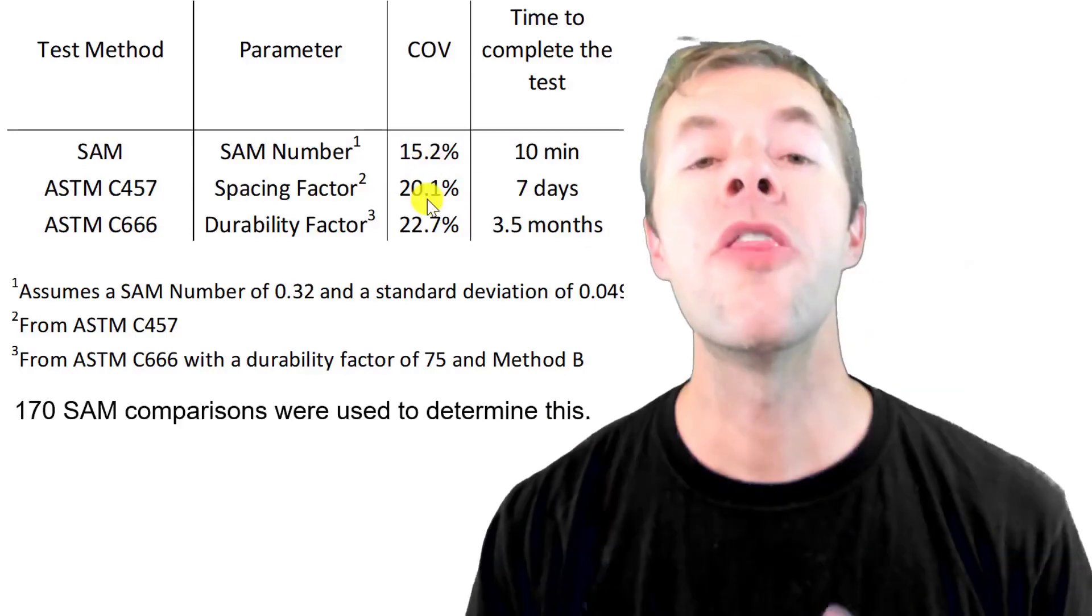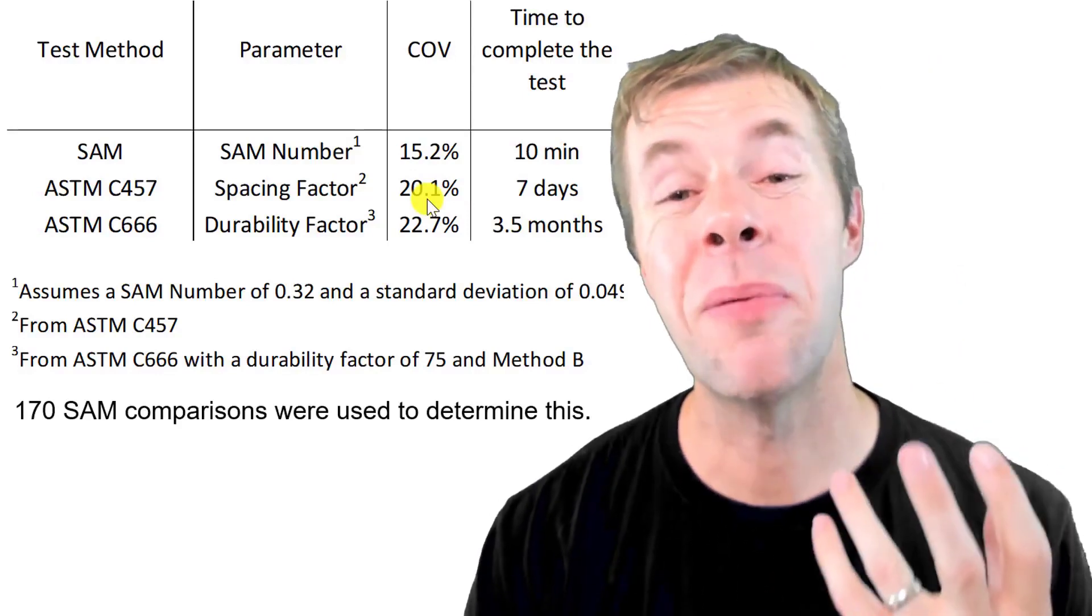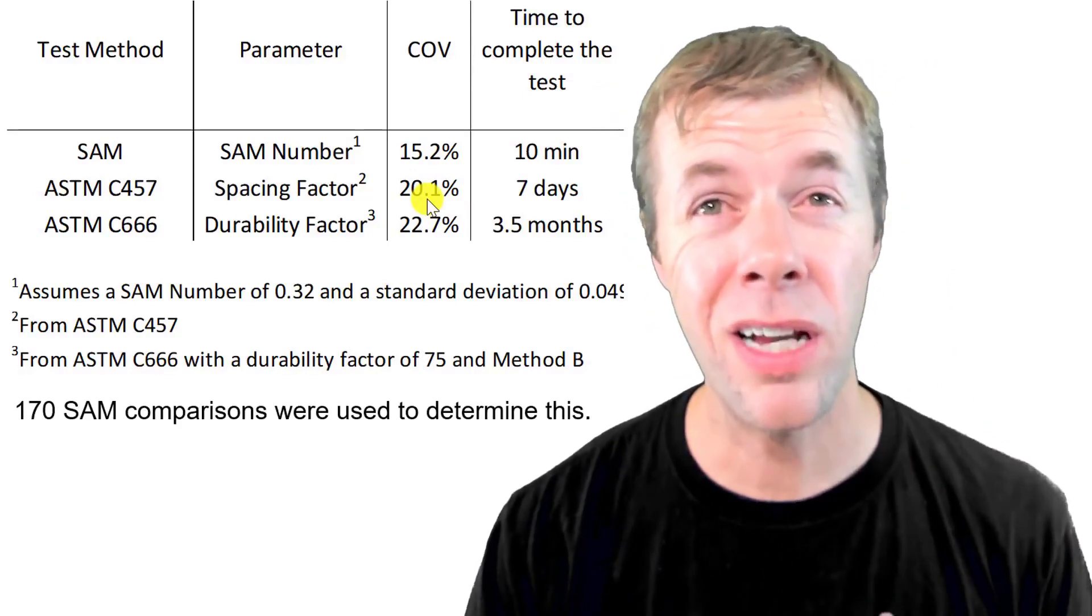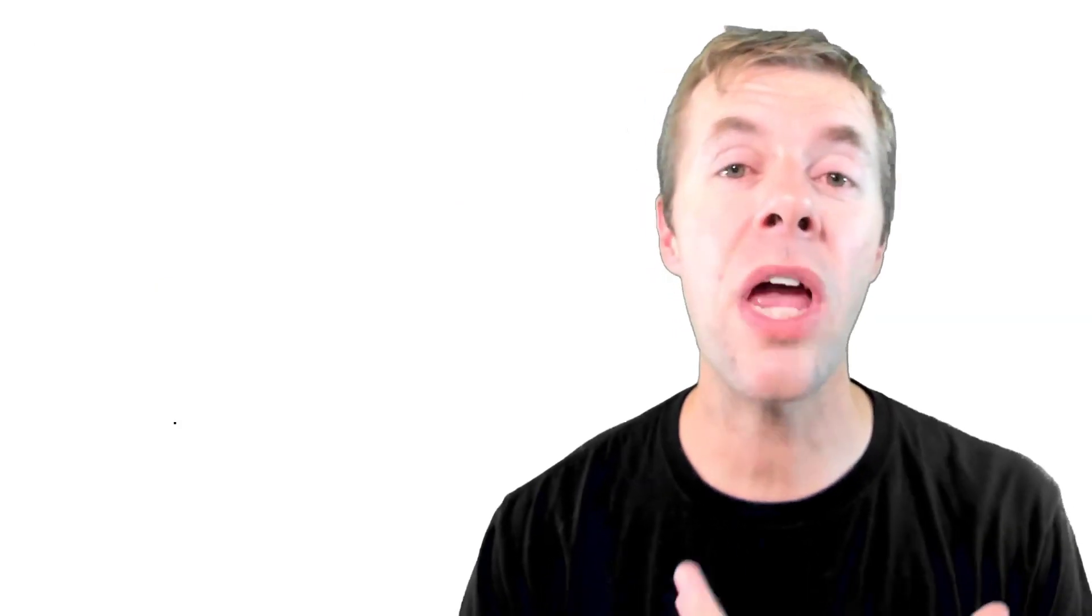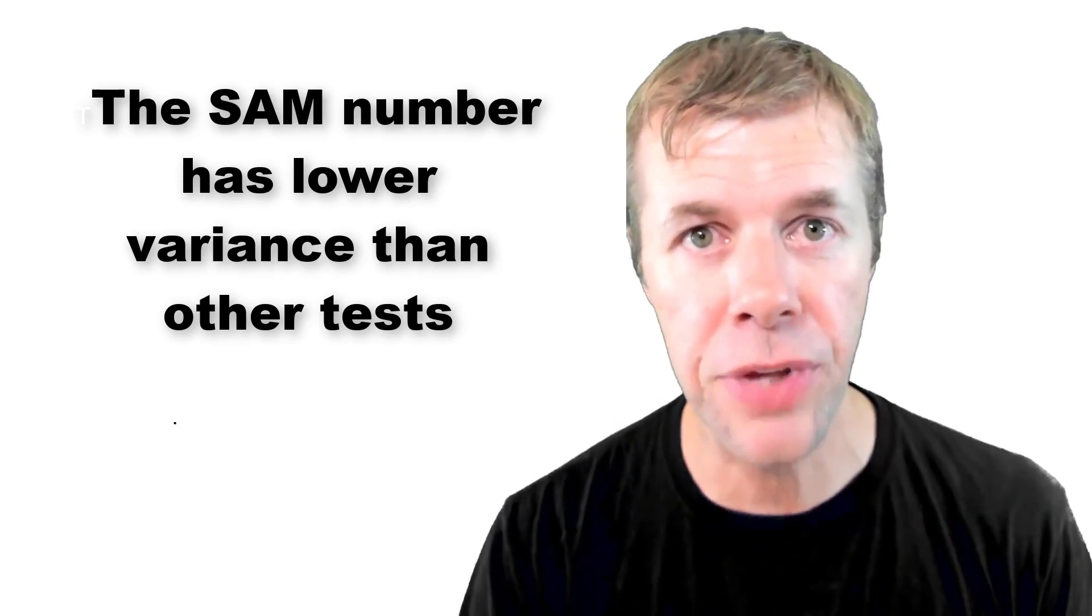The published coefficient of variation for the spacing factor is about 20% and for the rapid freeze-thaw test is about 22%. So the SAM number has lower variance than these other tests. The other great thing about the SAM is it can be completed in 10 minutes when the concrete is still wet, when you can still make changes to it. That's a real advantage.